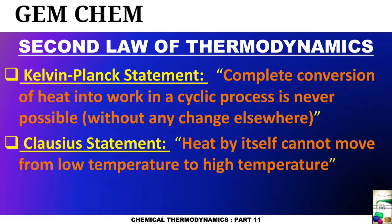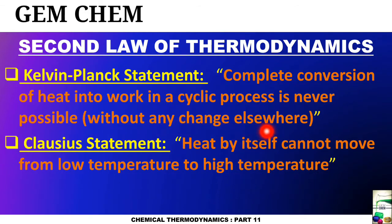The second law of thermodynamics has two different statements, and we can prove the equivalence between them. First is the Kelvin-Planck statement: complete conversion of heat into work in a cyclic process is never possible — this is not possible without any change elsewhere. The Clausius statement says: heat by itself cannot move from a low temperature to a high temperature.